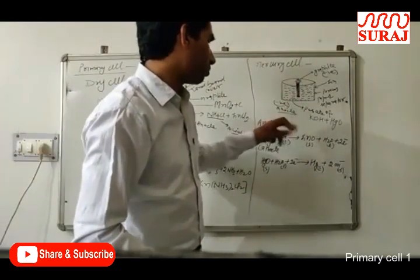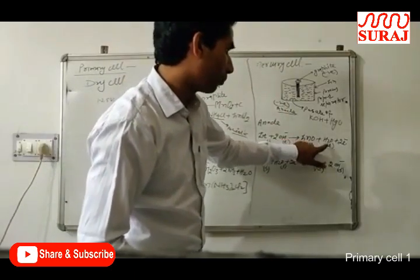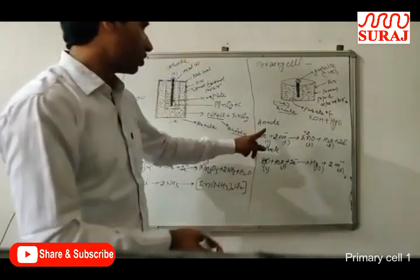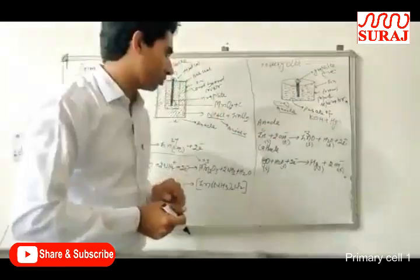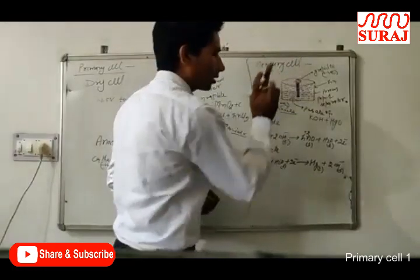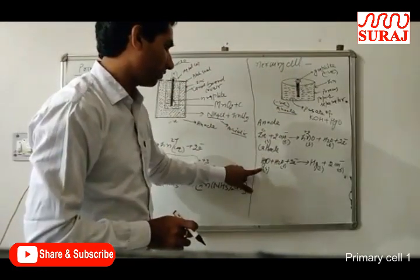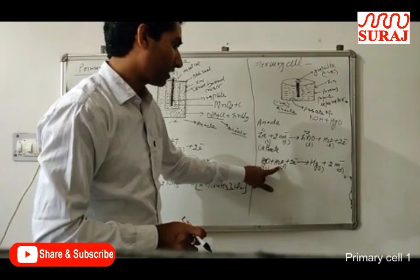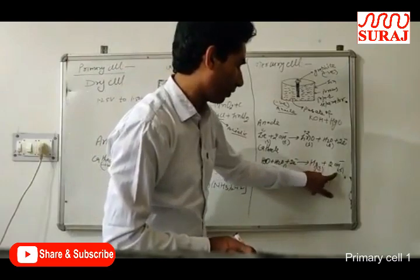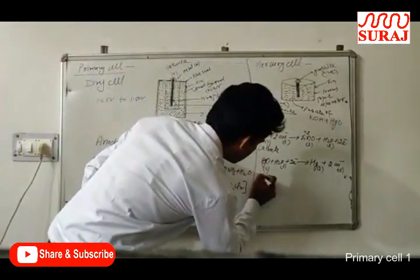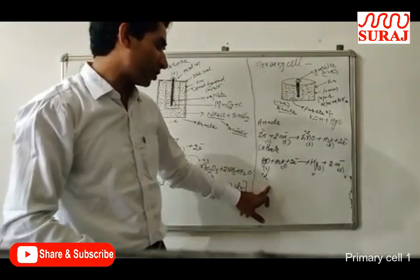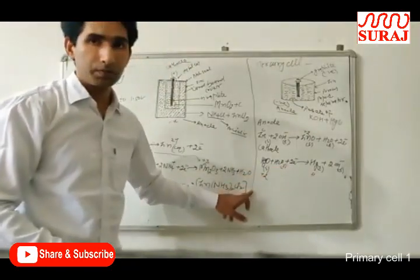At the anode, zinc comes in contact with hydroxide ions and changes into ZnO plus water plus 2 electrons. The oxidation state of zinc changes from 0 to +2, so 2 electrons are released and move from the anode to the cathode. At the cathode, HgO plus H₂O plus 2 electrons produces mercury (Hg) plus 2 OH⁻ ions. Mercury's oxidation state changes from +2 to 0, gaining 2 electrons — reduction takes place.